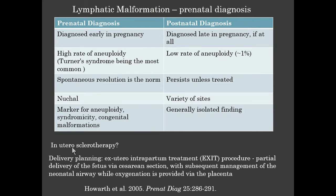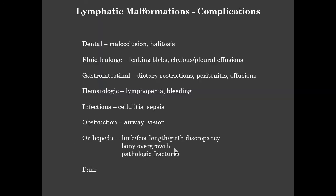It's important to diagnose these prenatally because, depending on the location, it helps with delivery planning. If there is a large cervical-facial lymphatic malformation, the recommendation would be an EXIT procedure—an ex-utero intrapartum procedure—where partial delivery via C-section occurs with subsequent management of the neonatal airway while oxygenation is provided via the placenta. A whole team can be prepared to manage the baby's airway, making for a much smoother procedure. The question of in-utero sclerotherapy has come up, but it's not ready for prime time.